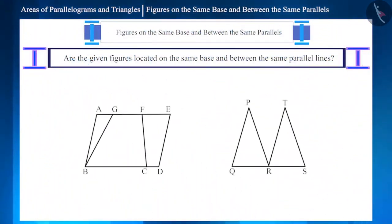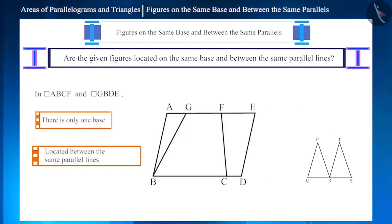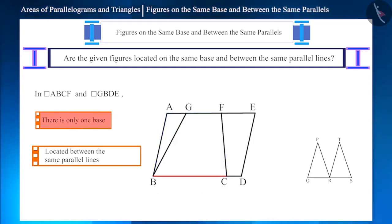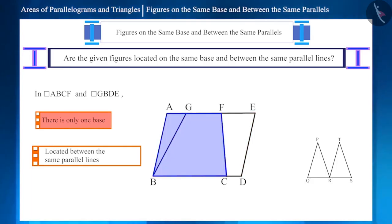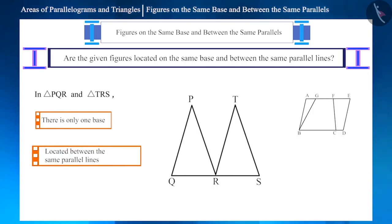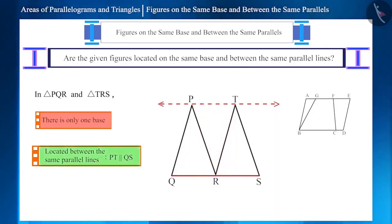Now let's see some more figures. In the first figure, there are two parallelograms: parallelogram ABCF and parallelogram GBDE. Are they located on the same base? No — the base of parallelogram ABCF is BC, and the base of parallelogram GBDE is BD. But the two parallelograms are located between the same parallel lines, AE and BD, though they don't have the same base. Similarly, in the second figure, the two triangles do not have the same base, but they are located between the same parallel lines, PT and QS.